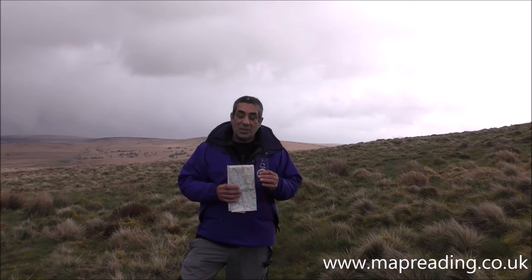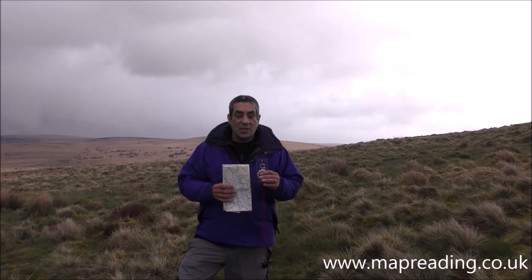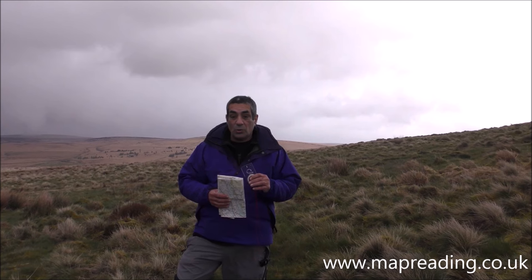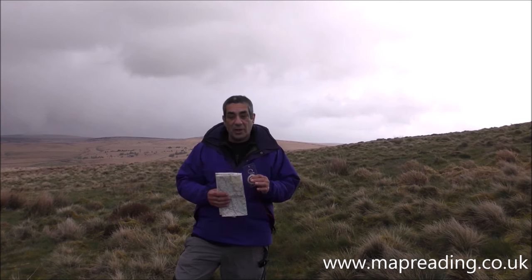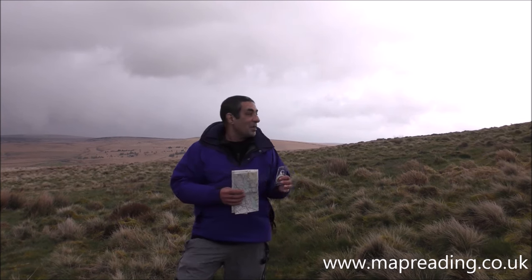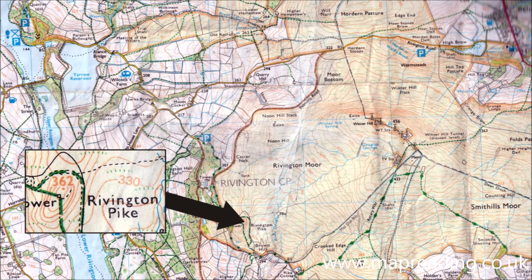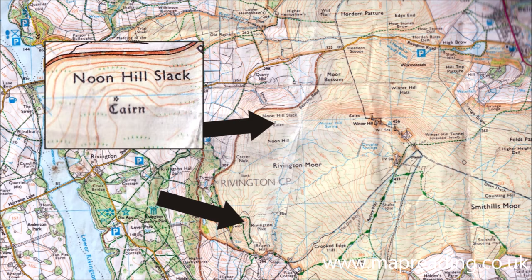For this to work properly you really need three points that you can identify both on the map and on the ground. From here, up in the middle of nowhere, I can see Rivington Pike in the distance, Noon Hill Slack over there...